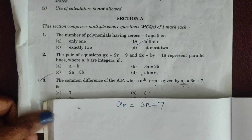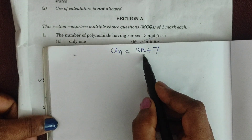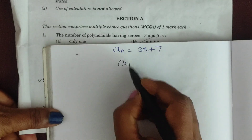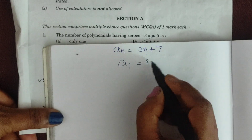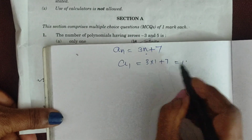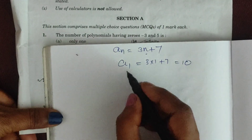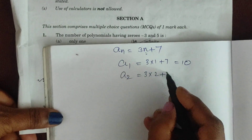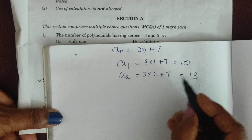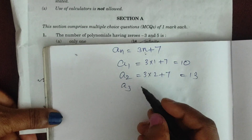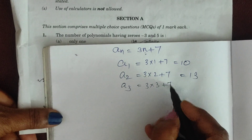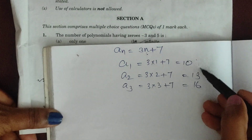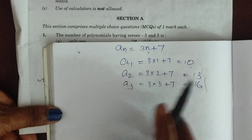It is a simple question. We use natural number substitution. The first term: n=1 gives 3×1 + 7 = 10. For n=2: 3×2 + 7 = 13. For n=3: 3×3 + 7 = 16. So the common difference is 3.